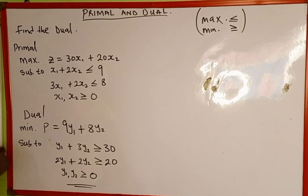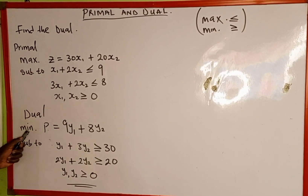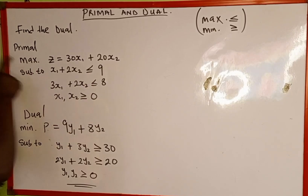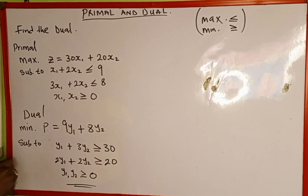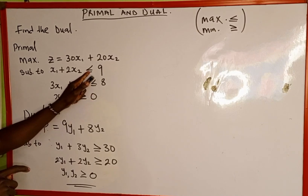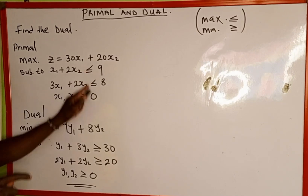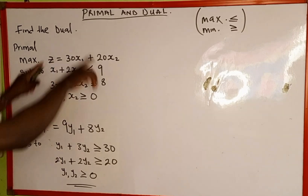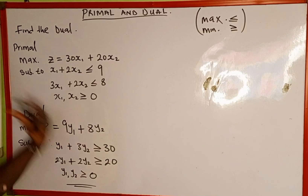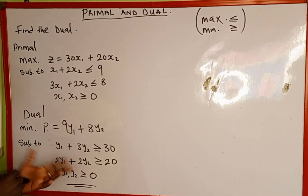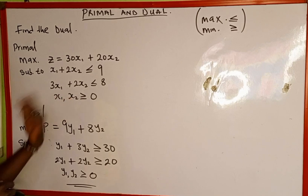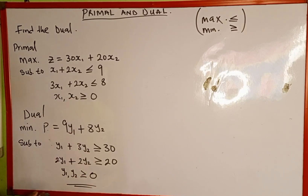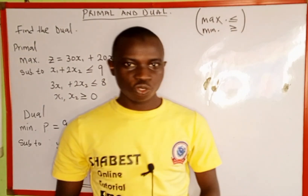And here is the dual of this problem. If the primal is maximization, we minimize the dual; and if the constraints are less than or equal to, it must be a maximization primal. In our next video, we will look at an example where the given problem is not in the correct form — we will convert it to the correct form before finding the duality. Thank you for watching, and please don't forget to subscribe to my YouTube channel.